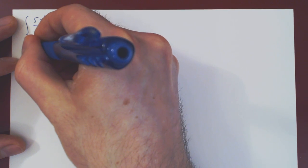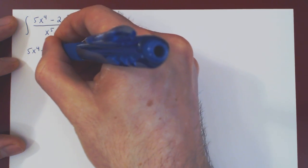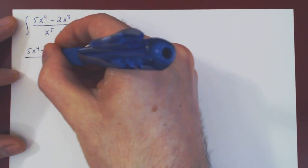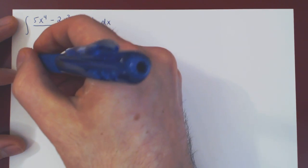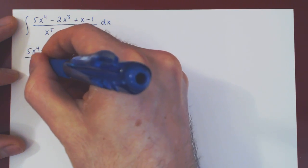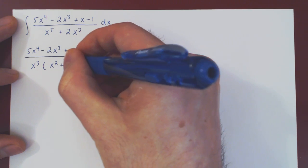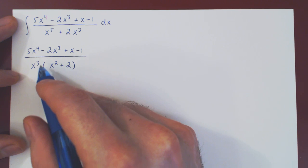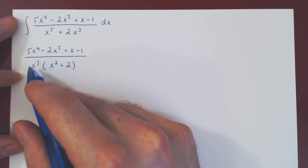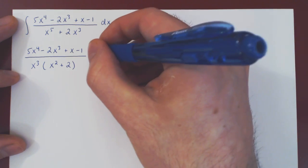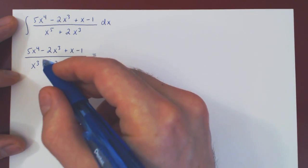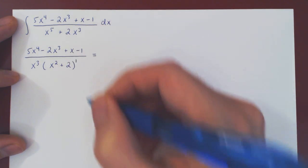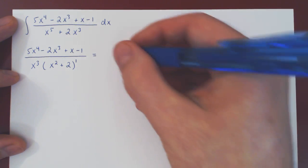We have 5x to the 4, minus 2x cubed, plus x minus 1, over — now we factor out x cubed — which leaves us with an x squared plus 2 factor. Now, x squared plus 2 is an irreducible quadratic, and x cubed is a cubic power of a linear term, so this is fully factored. We can now write the partial fraction decomposition. The exponent on x cubed is 3 and on x squared plus 2 it's 1, so we'll have 3 plus 1 equals 4 partial fractions.